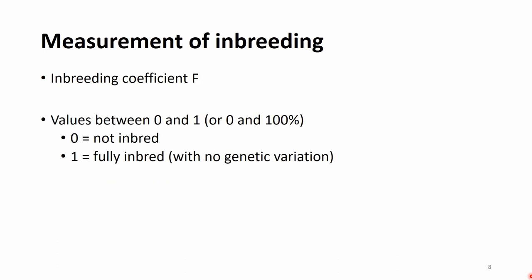When we talk about inbreeding, we want to determine the inbreeding coefficient of an individual, denoted as capital F. F takes values between 0 and 1, or 0 and 100%. If F equals 0, the individual is not inbred. If F equals 1, or 100%, the individual would be fully inbred — absolutely no genetic variation within the genome, and all nucleotides would be 100% homozygous.